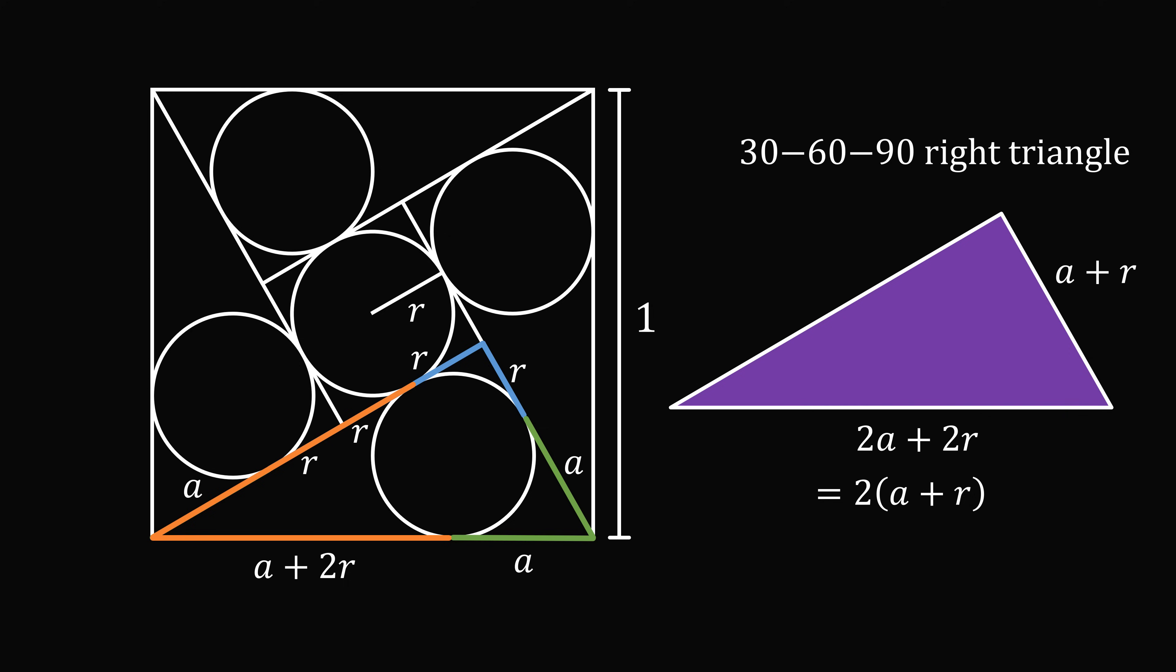So this must be a 30-60-90 right triangle. Now, we know the remaining side is equal to a plus r plus r plus r, which is a plus 3r. Finally, the hypotenuse of this right triangle is exactly the side length of the square, so it will be equal to 1.